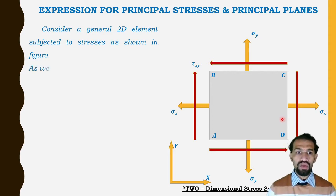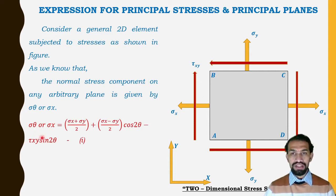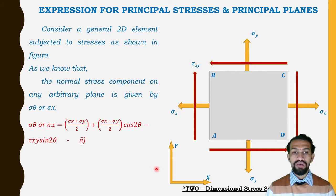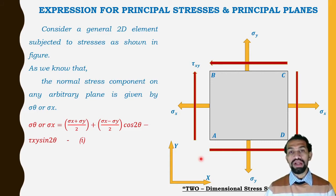As we know, the normal stress component on any arbitrary plane is given by σθ (or σx′), equal to: σx + σy divided by 2, plus σx minus σy divided by 2 times cos2θ, minus τxy·sin2θ. This equation allows us to calculate normal and tangential stresses on any arbitrary plane.